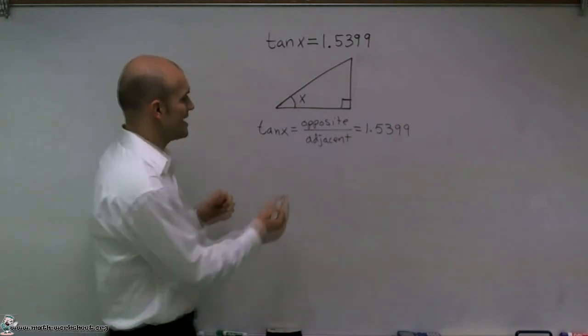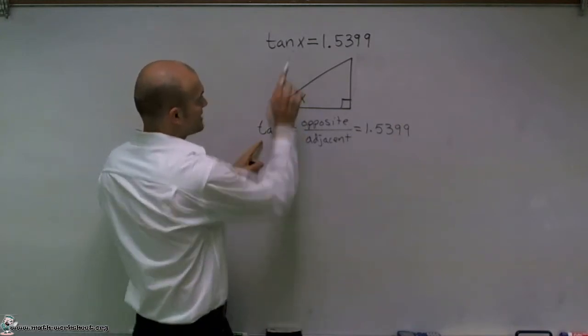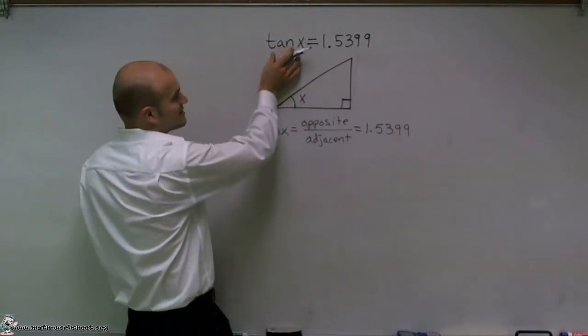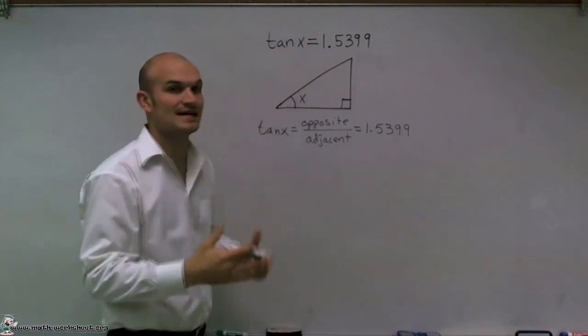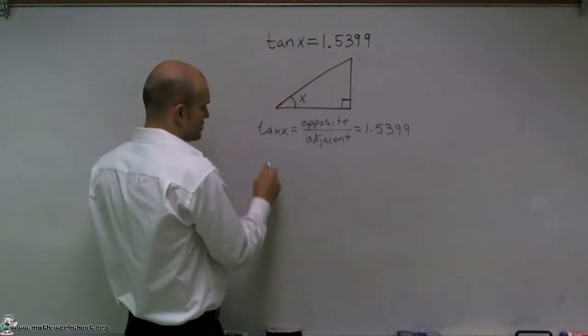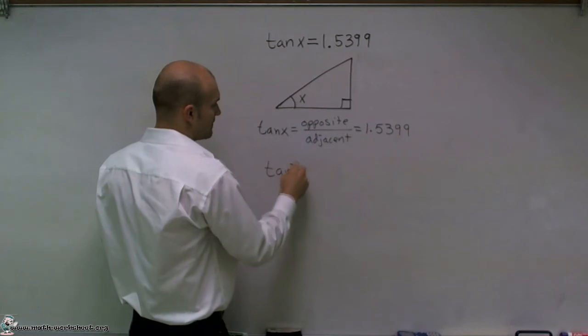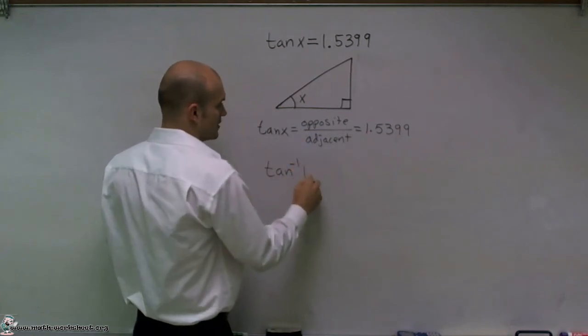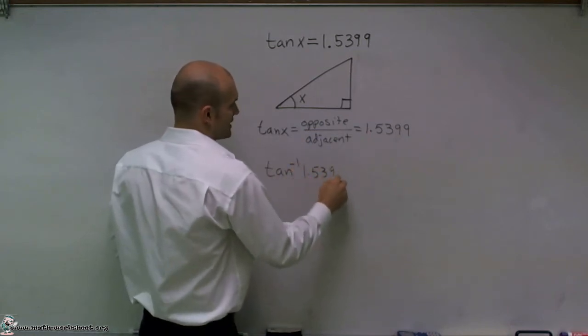So what we have is if I want to find what x is, I'm going to have to, instead of taking the tangent function, I'm going to have to use the inverse tangent on my function. So what I'm going to do is I'm going to say I want to find the inverse tangent of 1.5399.